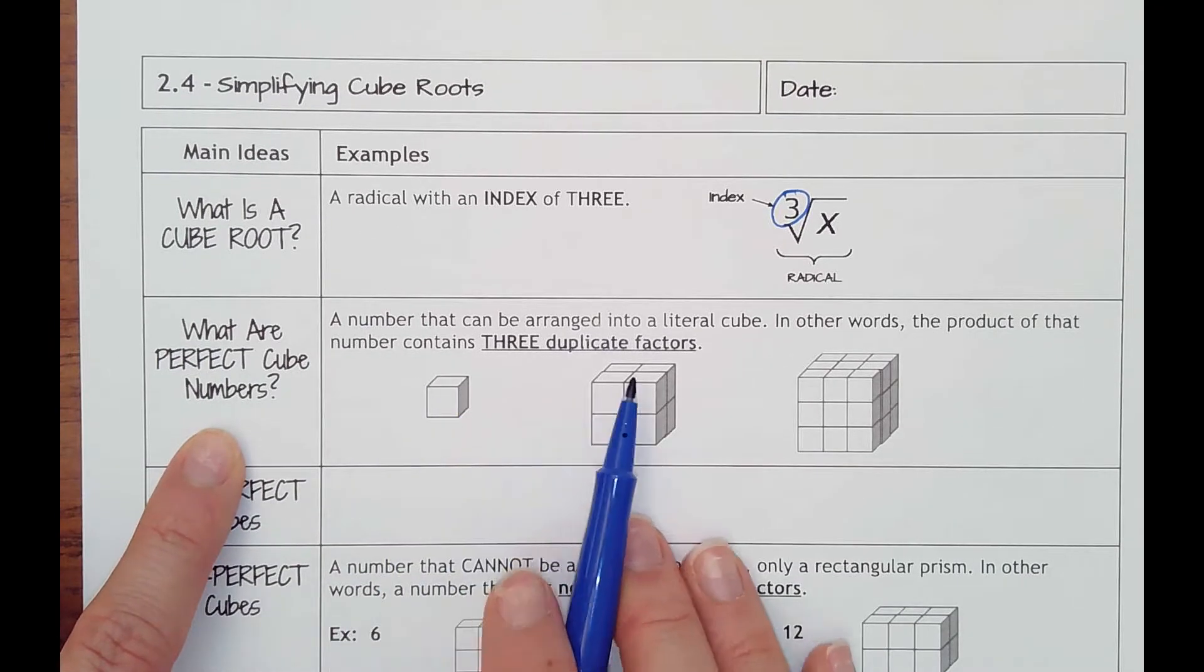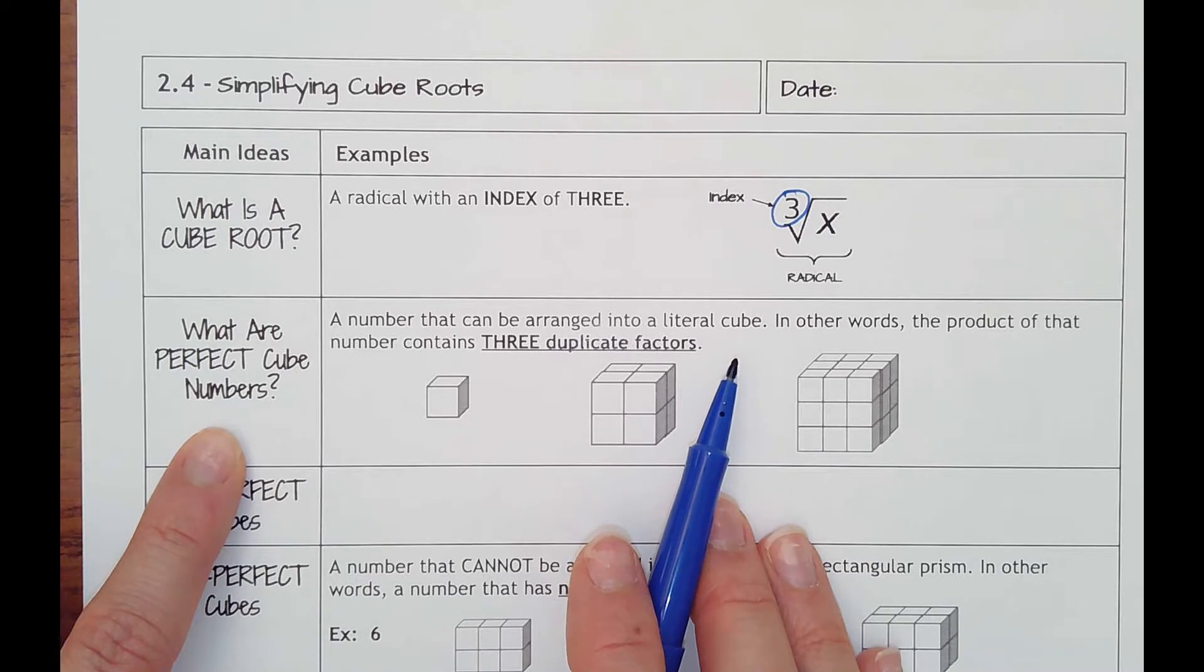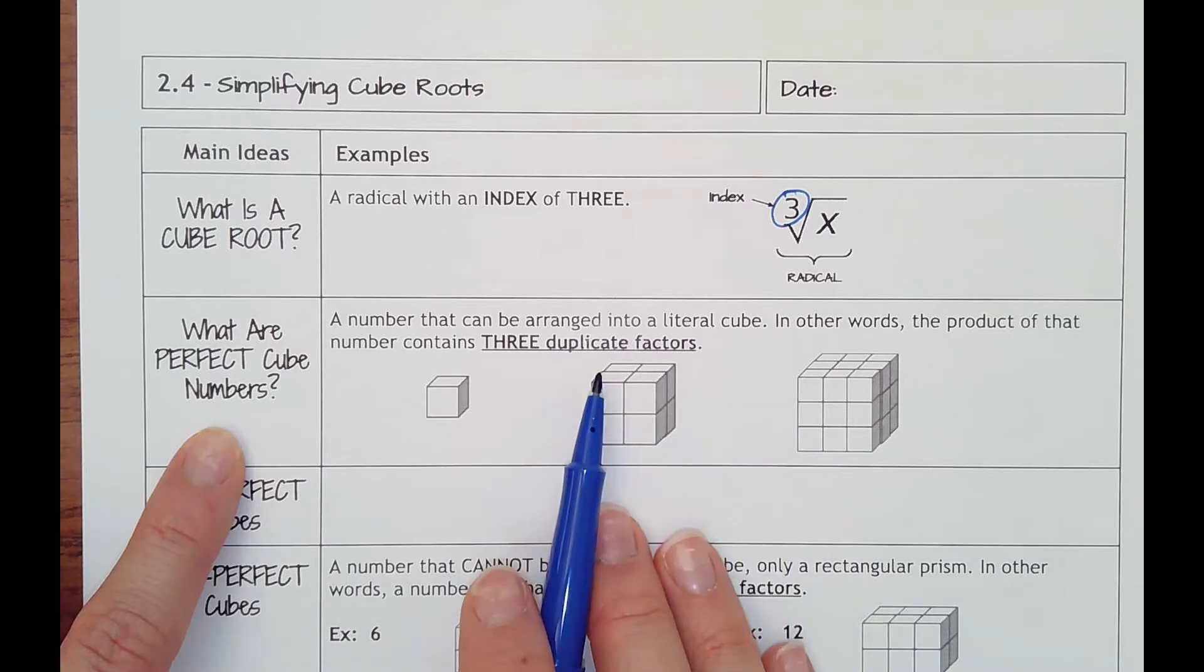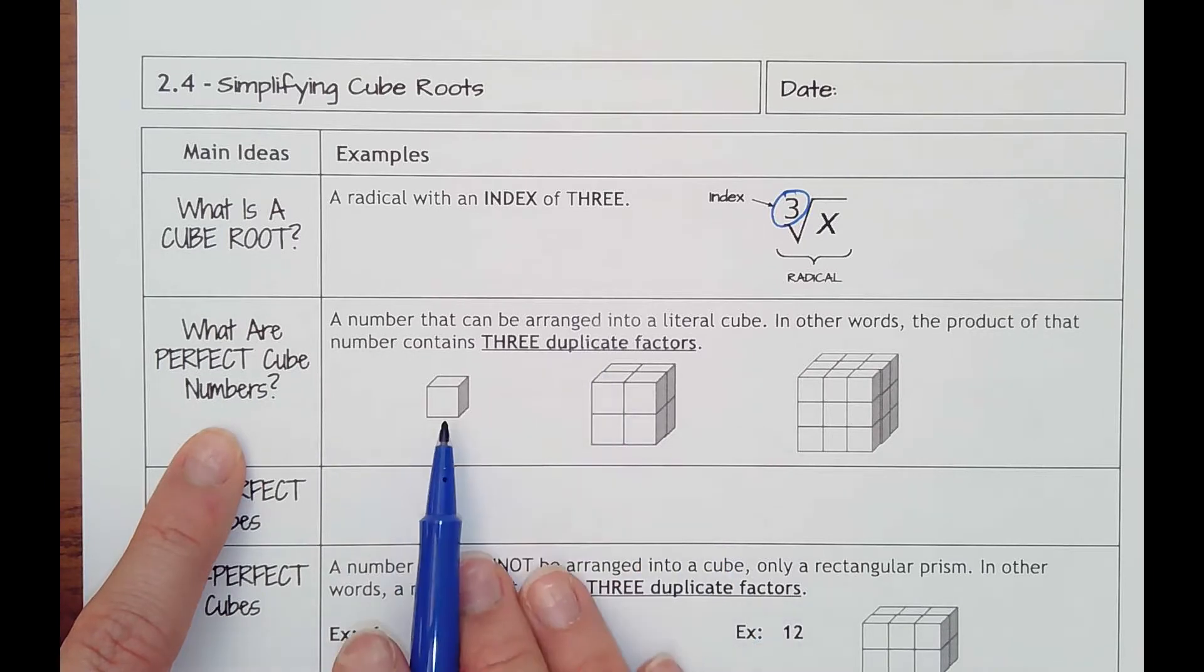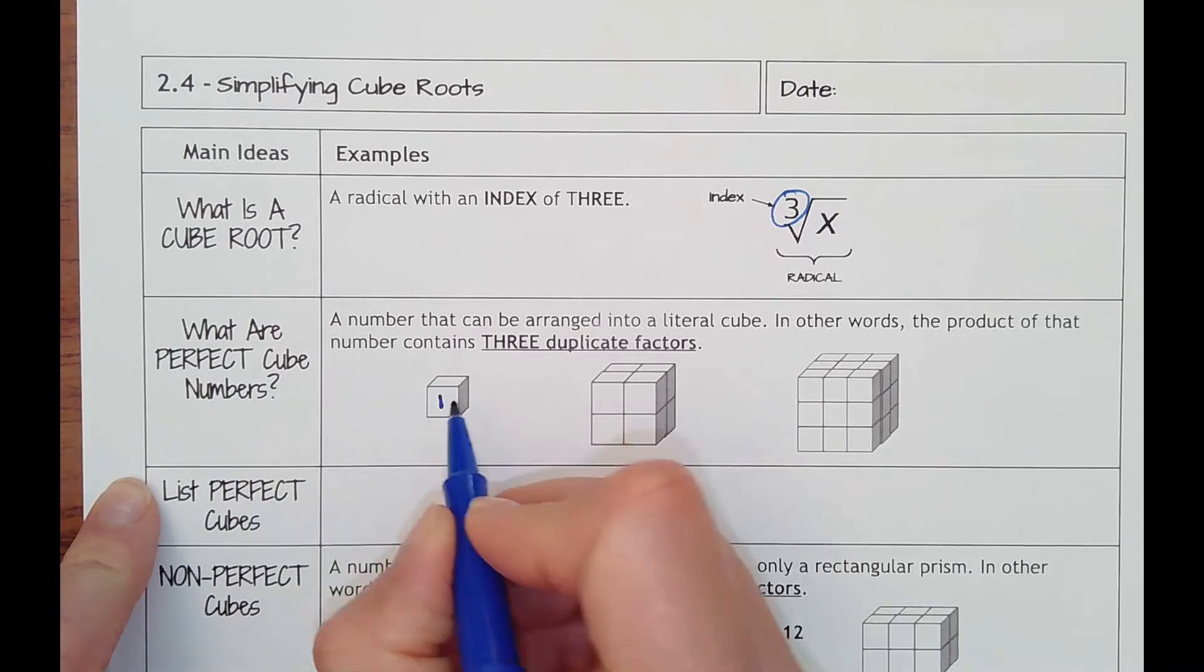Perfect cube numbers are numbers that can be arranged into a literal cube. In other words, the product of that number contains three duplicate factors. So a number times itself times itself.